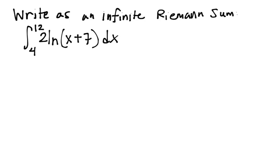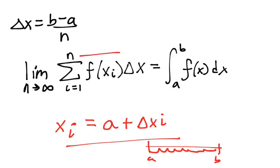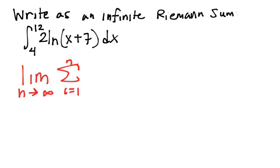So an example: write this definite integral as an infinite Riemann sum. Much of our answer is going to be boilerplate — it's going to be an infinite sum, so the limit as n approaches infinity of a sum from 1 up to n, and the rest of it we need to figure out. From the definition of definite integral, we have two components: a function and a delta x. Delta x is a little easier to figure out first — in fact, you'll need it first.